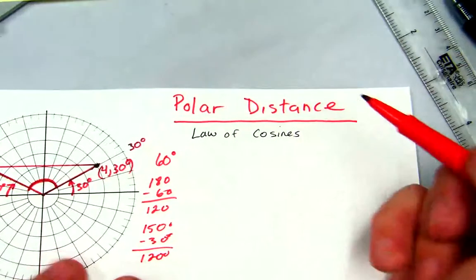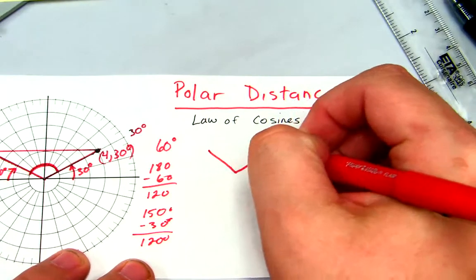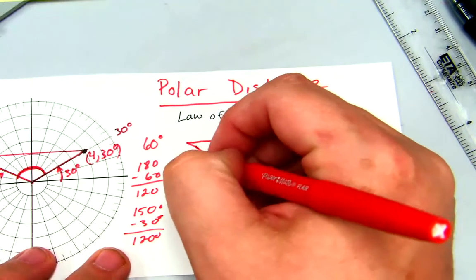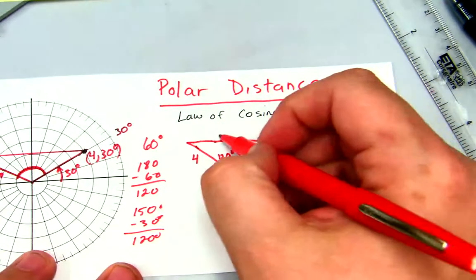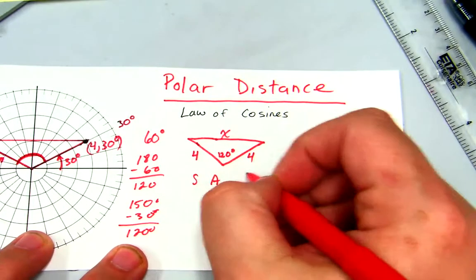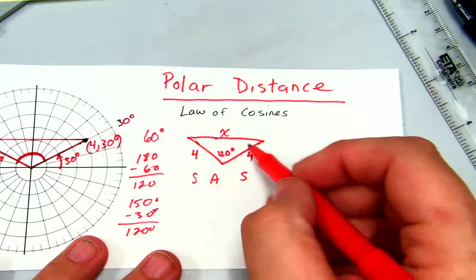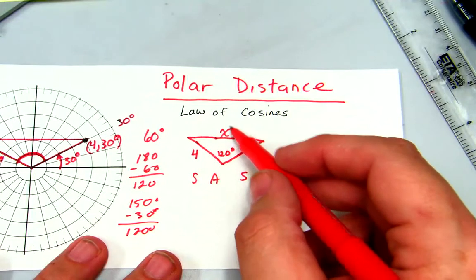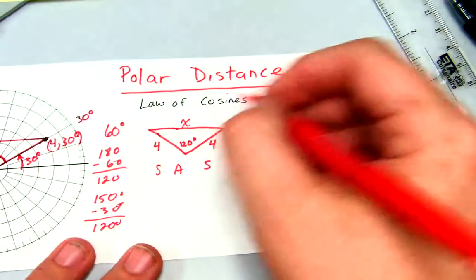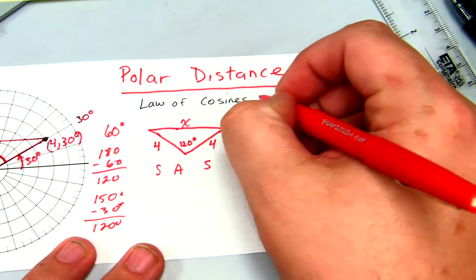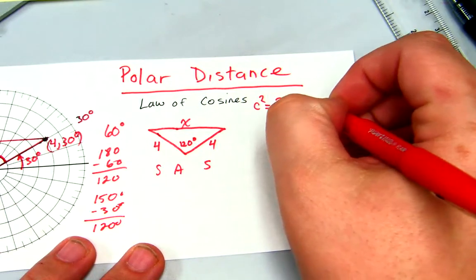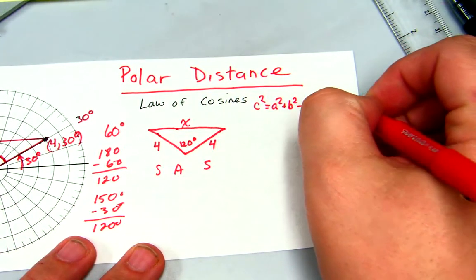What we have is a triangle with a 120-degree angle, sides of 4 and 4, and we want the value x. This is a side-angle-side situation, and when we have side-angle-side and want the other side, we use the law of cosines: c squared equals a squared plus b squared minus 2ab times the cosine of angle C.